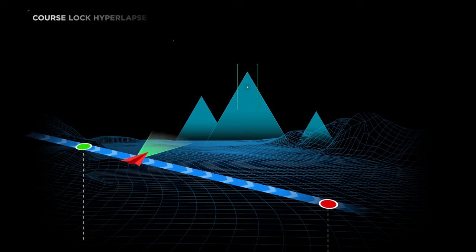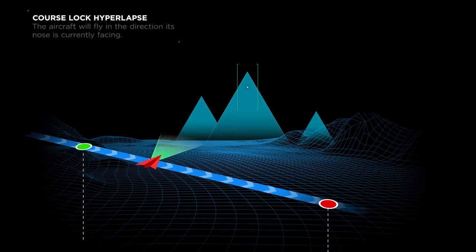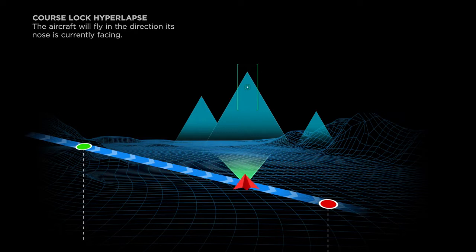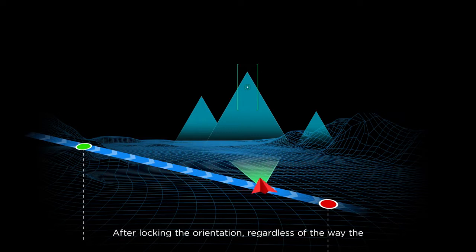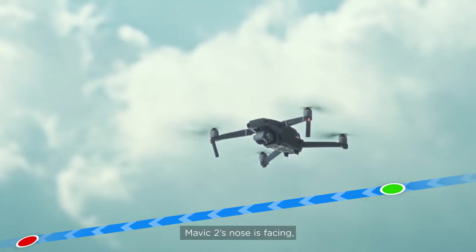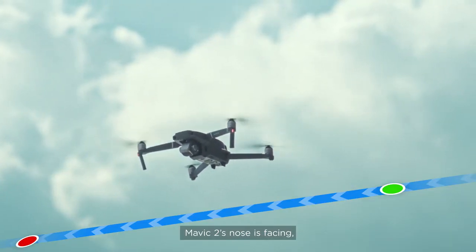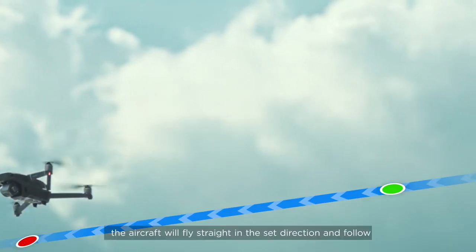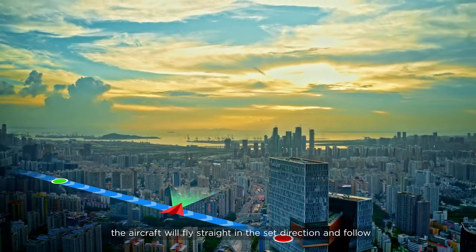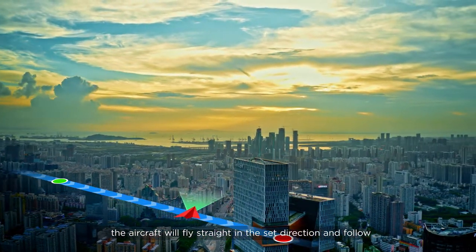In Course Lock Hyperlapse, the aircraft will fly in the direction its nose is currently facing. After locking the orientation, regardless of the way the Mavic 2's nose is facing, the aircraft will fly straight in the set direction and follow the subject while shooting.